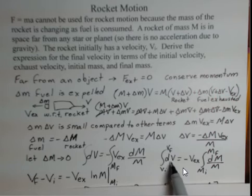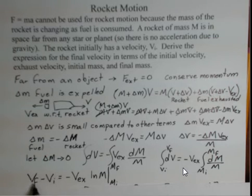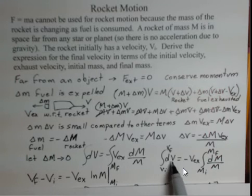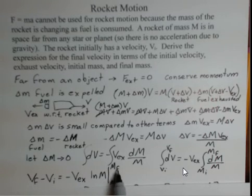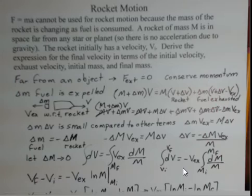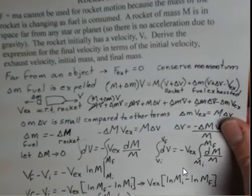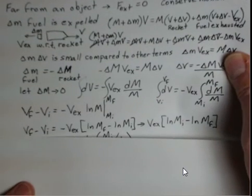The anti-derivative of dv, that just gives us v to the first power. That has to be evaluated at the final and initial velocities. So upper limit, lower limit, these are subtracted when we do the anti-derivative process. And then we have minus v e sub x, natural log here, that has to be evaluated at the upper and lower limits.